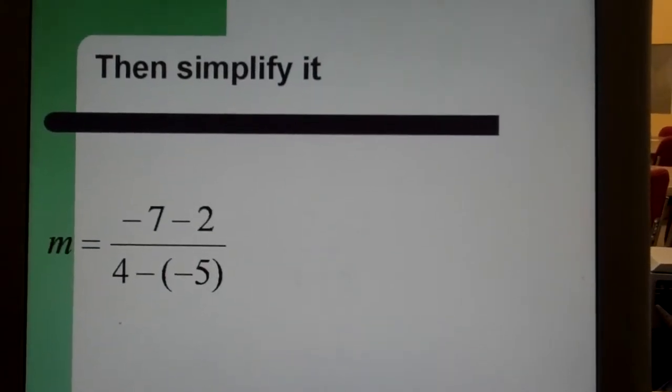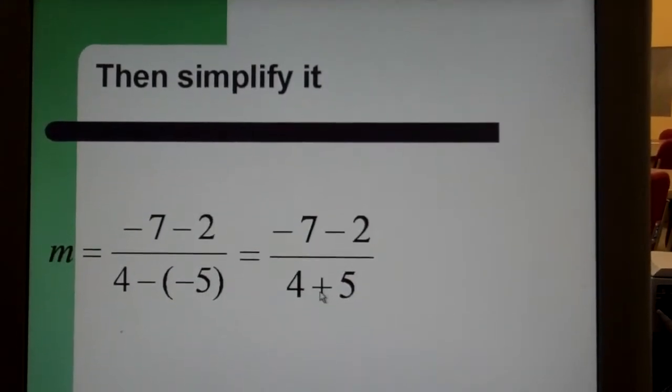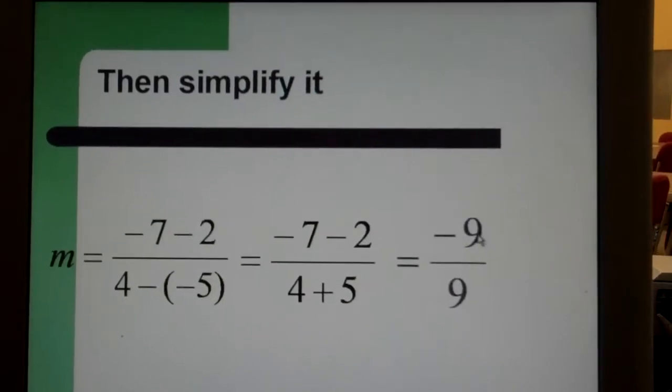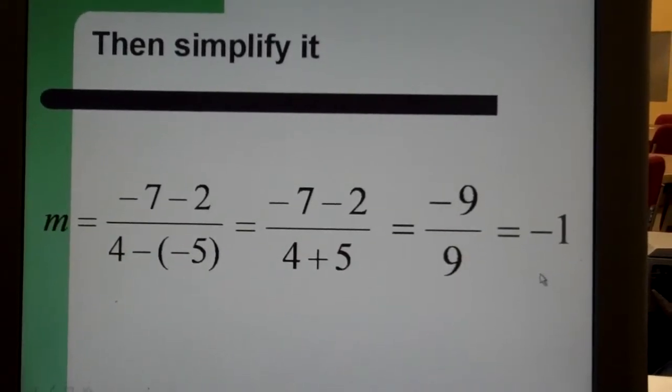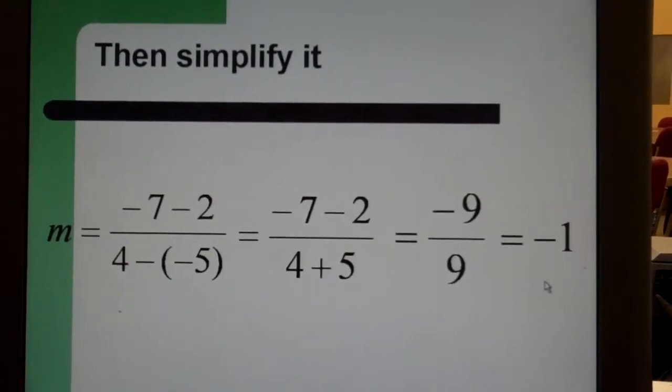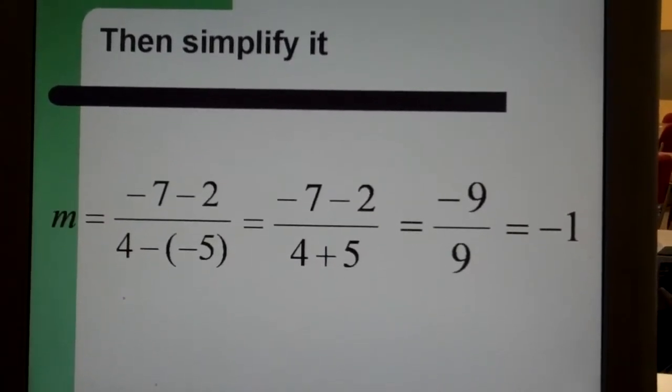Now let's just go ahead and solve this. So we change minus a negative into plus a positive. We find negative nine over nine, which simplifies into negative one. So the slope of the line through those two points would be negative one.